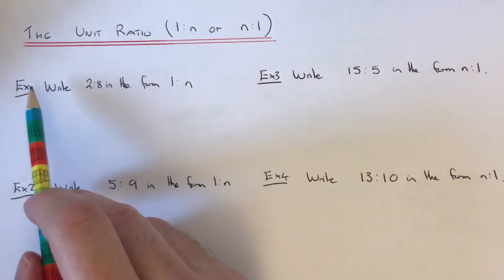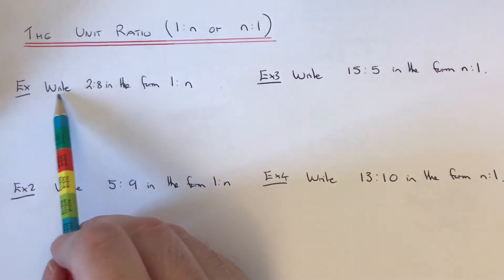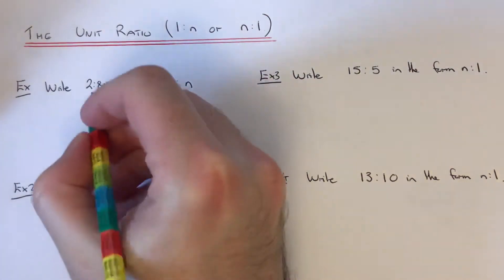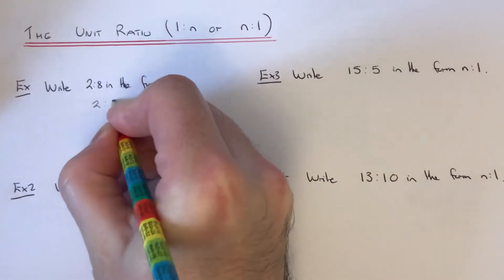So let's go straight into the examples that we have here. So the first one is to write 2 to 8 in the form 1 to N. So if we copy our ratio down, which is 2 to 8.